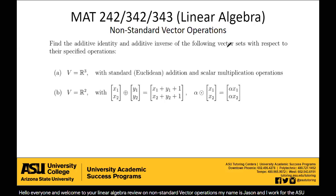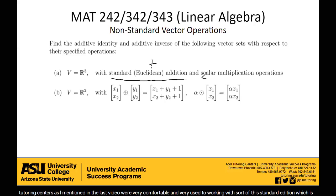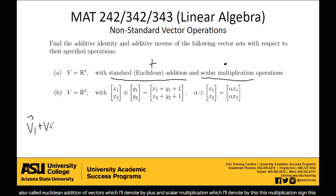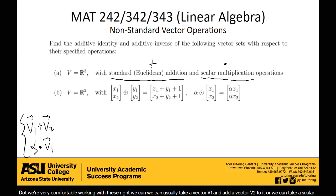As I mentioned in the last video, we're very comfortable and used to working with standard addition, also called Euclidean addition of vectors, which I'll denote by plus, and scalar multiplication, which I'll denote by this dot. We're very comfortable working with these. We can take a vector v1 and add a vector v2 to it, or take a scalar alpha and multiply it by a vector v1.